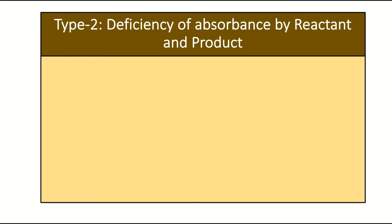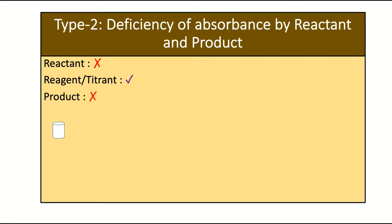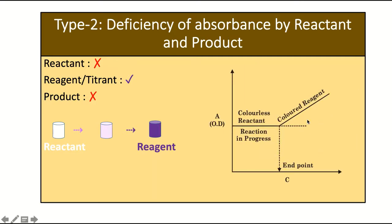Type 2 is the deficiency of absorbance by the reactant and product. The reactant does not absorb, the titrant added shows absorbance characteristics, and the product formed also does not show absorbance. Initially the solution is colorless. Adding the reagent, the product formed also shows no absorbance, but the reagent itself shows absorbance. After the endpoint, the color of the solution is only due to the reagent.